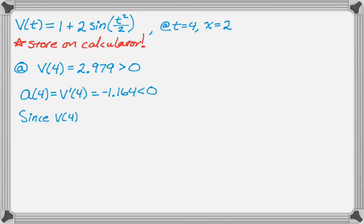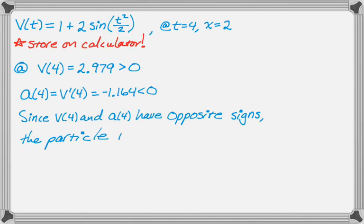And then I can make my conclusion. So since v of 4 and a of 4 have opposite signs, we know that this thing is slowing down. And that's really all we need to say about it. So it's got to be slowing down. All right. Let's take a look at the next one.